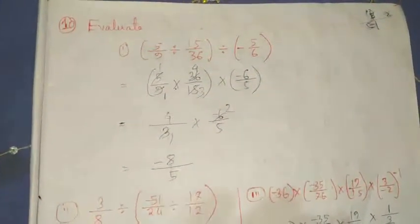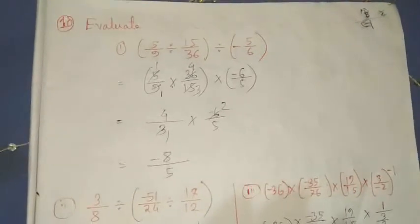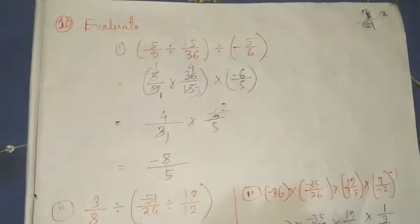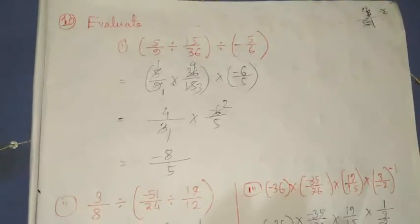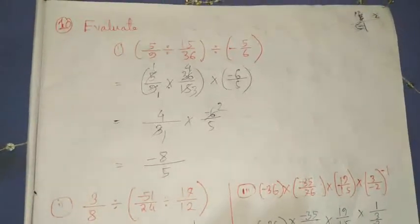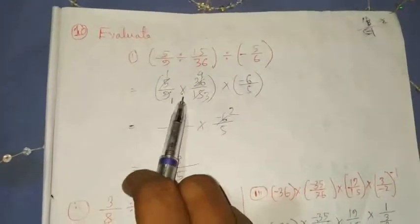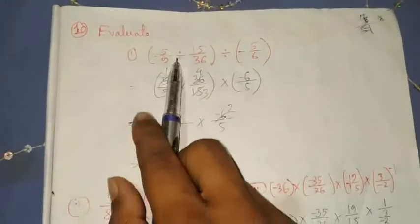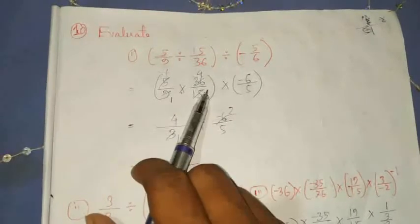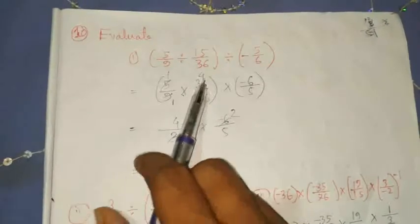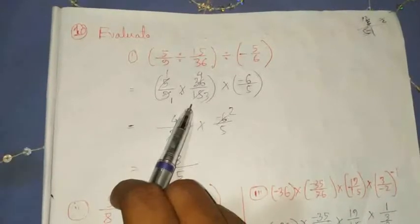The third question is to evaluate. If you see this type of problem, we have to change the division into multiplication. First write the first term, which is 5 by 9, and since the sign is multiplication, we will get 36 by 15.